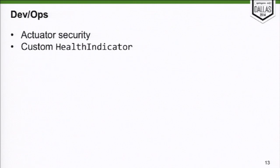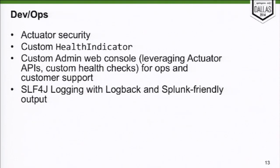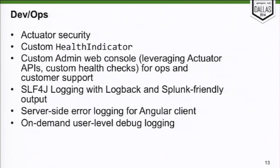Actuator — if you haven't used it, check it out. We locked it down with admin rights and wrote our own custom health indicators. We wrote our own UI for the admin which leverages the Actuator APIs to some degree and also has custom stuff we use for customer support. We have Splunk in our data center, so we did lots of logging leveraging Logback. The Angular client sends any JavaScript errors server-side, so we can see the user experience end to end. Even more useful — if we have problem users, we can turn on debug logging for their session from our admin console.